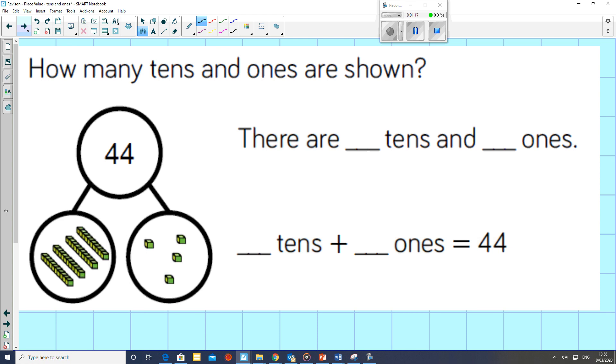Like when we use our base 10, our Dienes equipment, it comes in little rows of 10. We have 4 lots of 10. That is 10, 20, 30, 40.